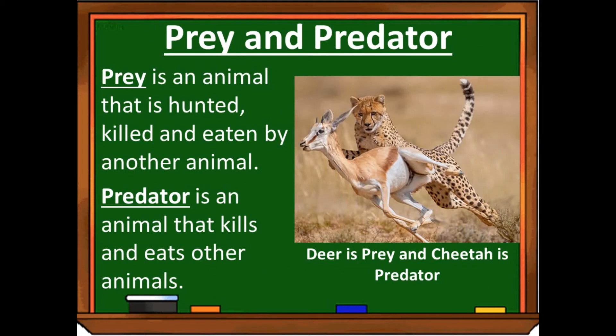Next is prey and predator. Prey is an animal that is hunted, killed and eaten by another animal. Predator is an animal that kills and eats the other animal. In this picture, deer is the prey because it is eaten by lion or cheetah. And cheetah is the predator because it eats the deer.